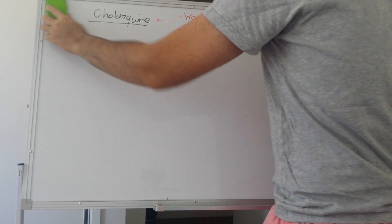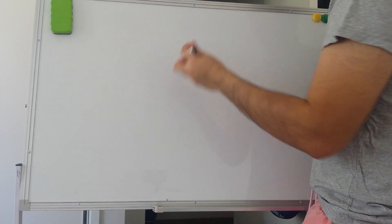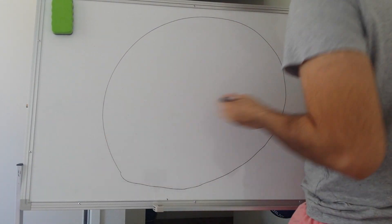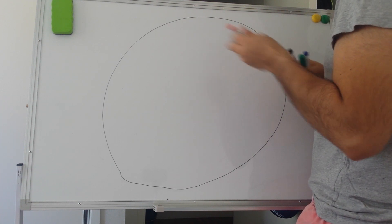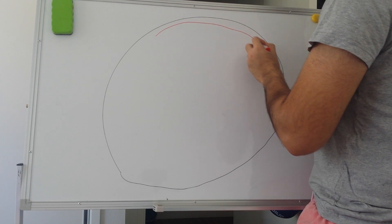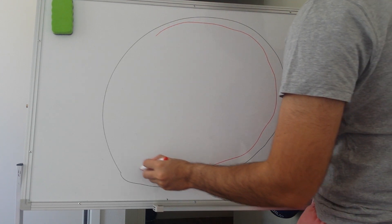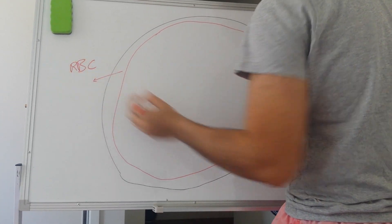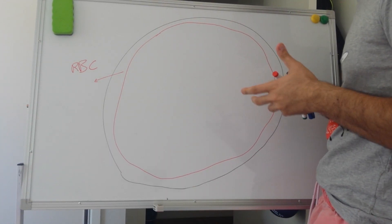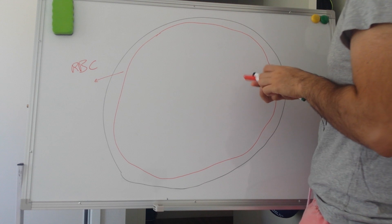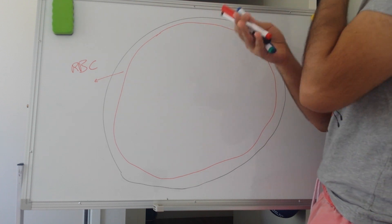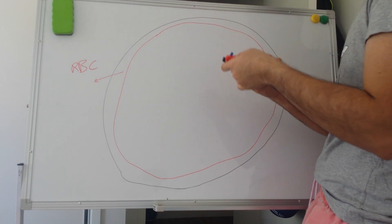Now let me draw a typical cell that is infected with malaria. This is your cell — malaria essentially infects a red blood cell. So imagine this is a red blood cell, and the parasite goes inside the red blood cell. This red thing is the parasite.